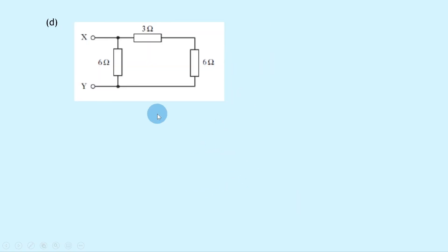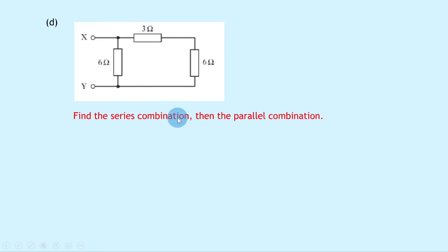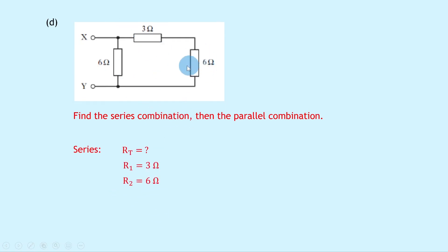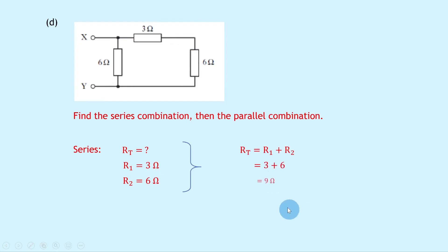Part D shows something a bit more complicated, but we have a 3 ohm resistor in series with a 6 ohm resistor, and that combination is in parallel with another 6 ohm resistor. We find the series combination first: R1 is 3 ohms and R2 is 6 ohms. RT equals R1 plus R2, so substituting in gives 3 plus 6, which gives us 9 ohms.